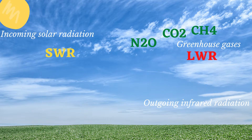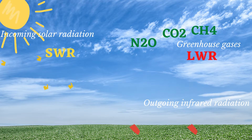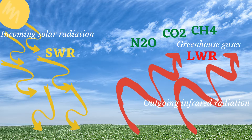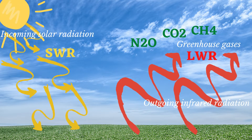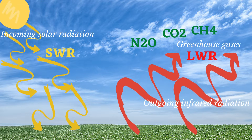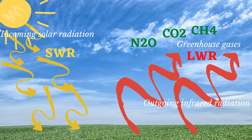While the incoming solar radiation is shortwave radiation, the radiation which is transmitted from the surface as outgoing infrared radiation is longwave radiation. Greenhouse gases in the troposphere will respond differently to the incoming solar radiation from the way they respond to the outgoing infrared radiation.